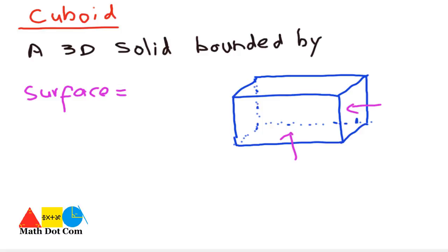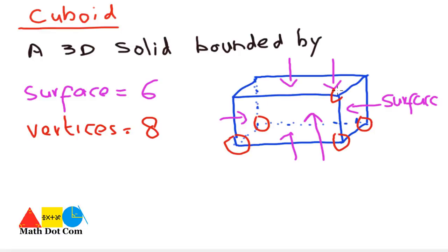First, we draw it. Vertices. 1, 2, 3, 4, 5 and the rear one. These are the surfaces. See how many vertices are there. There are 8 vertices. So, let's point them out. 1, 2, 3, 4, 5, 6, 7, 8. There are 8 vertices.